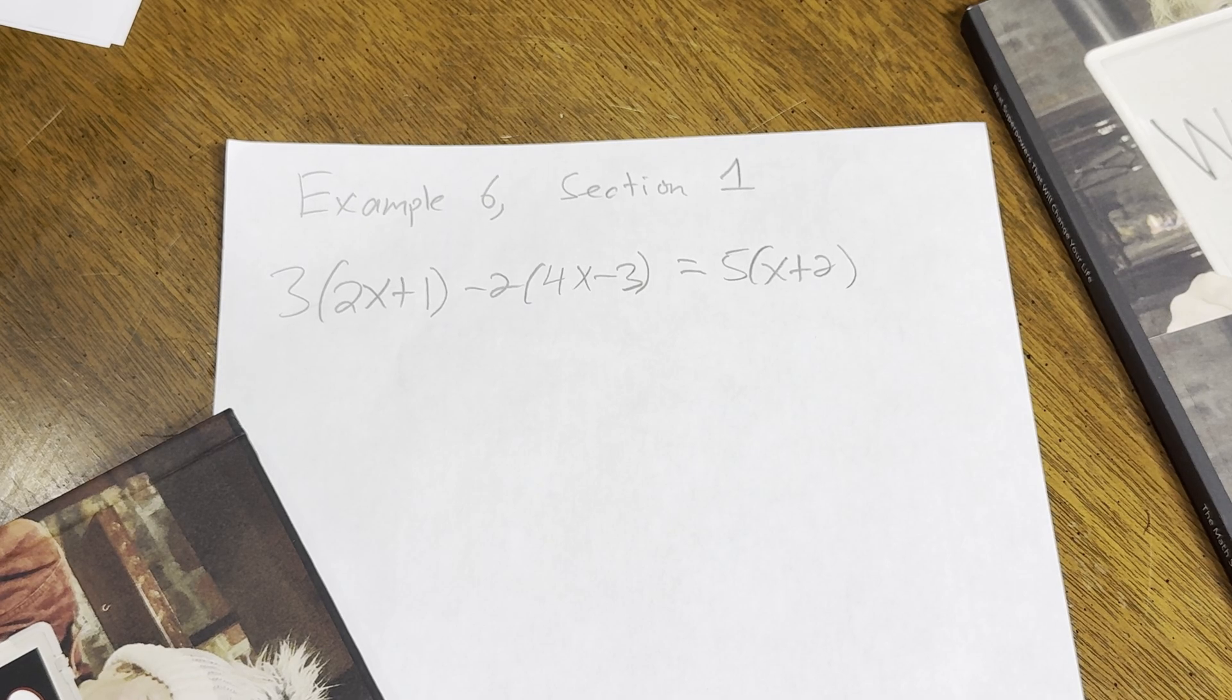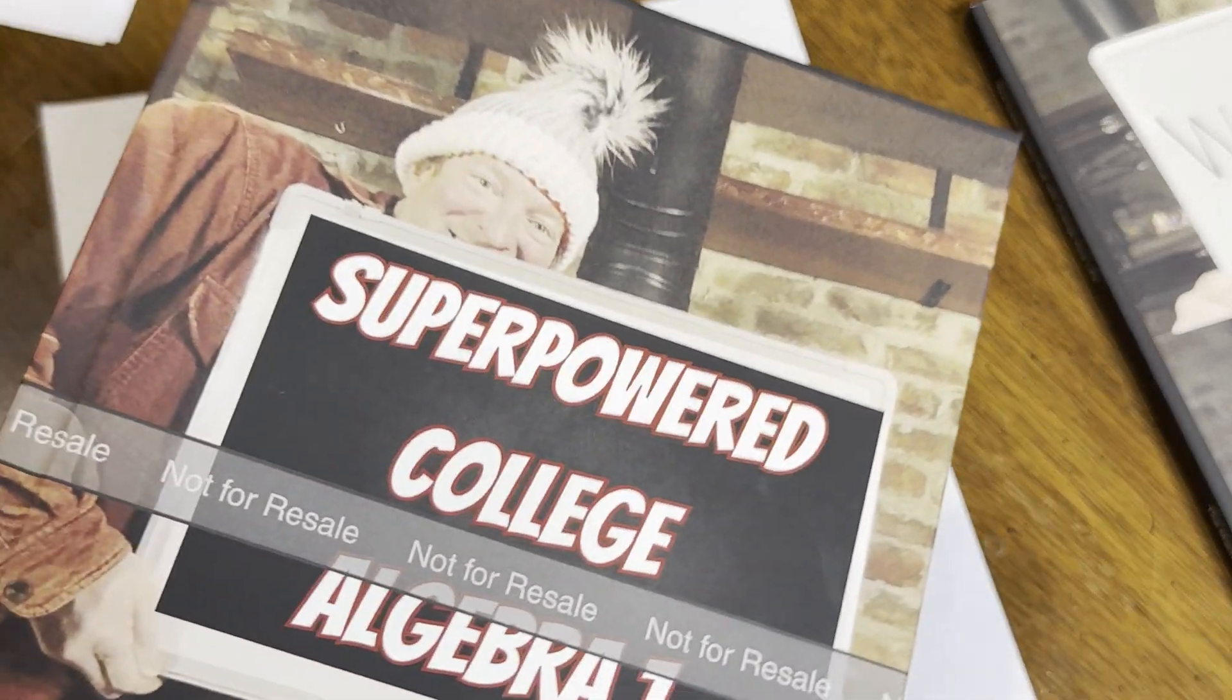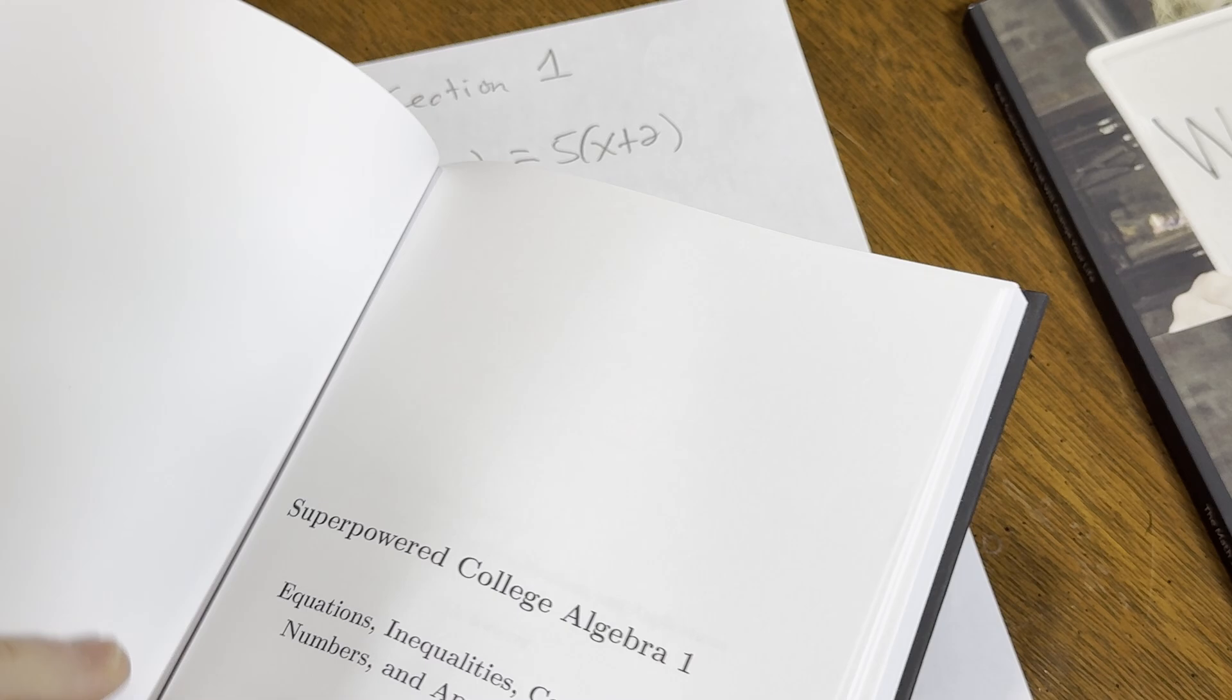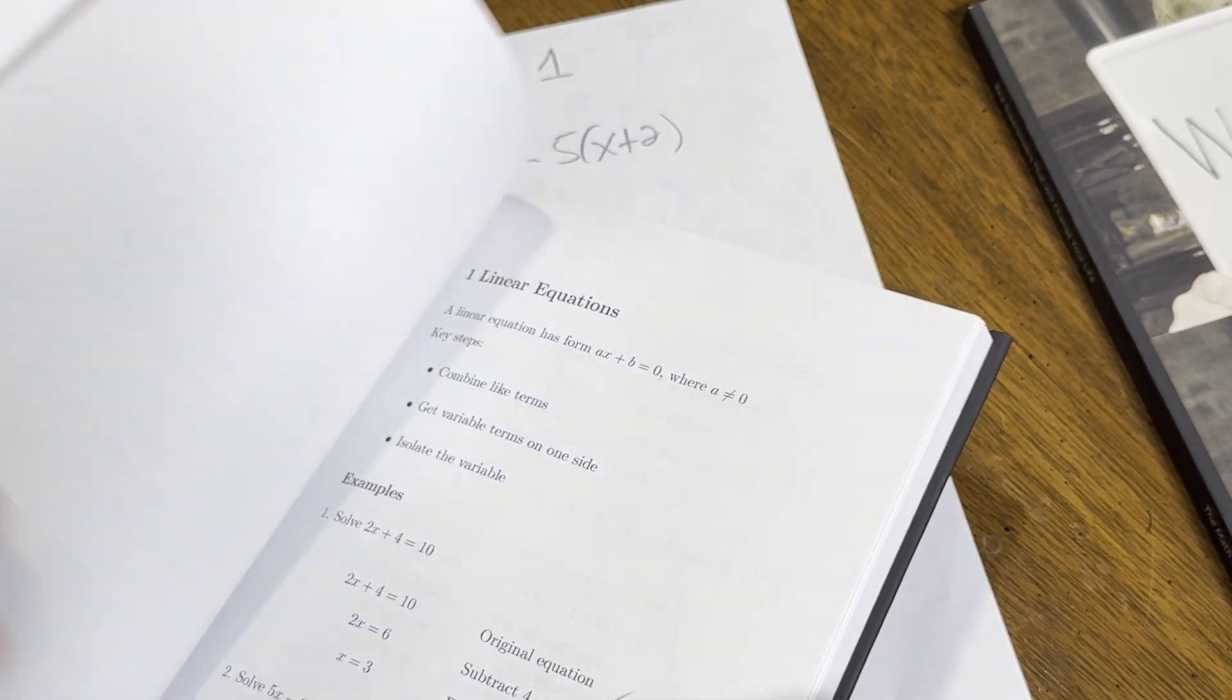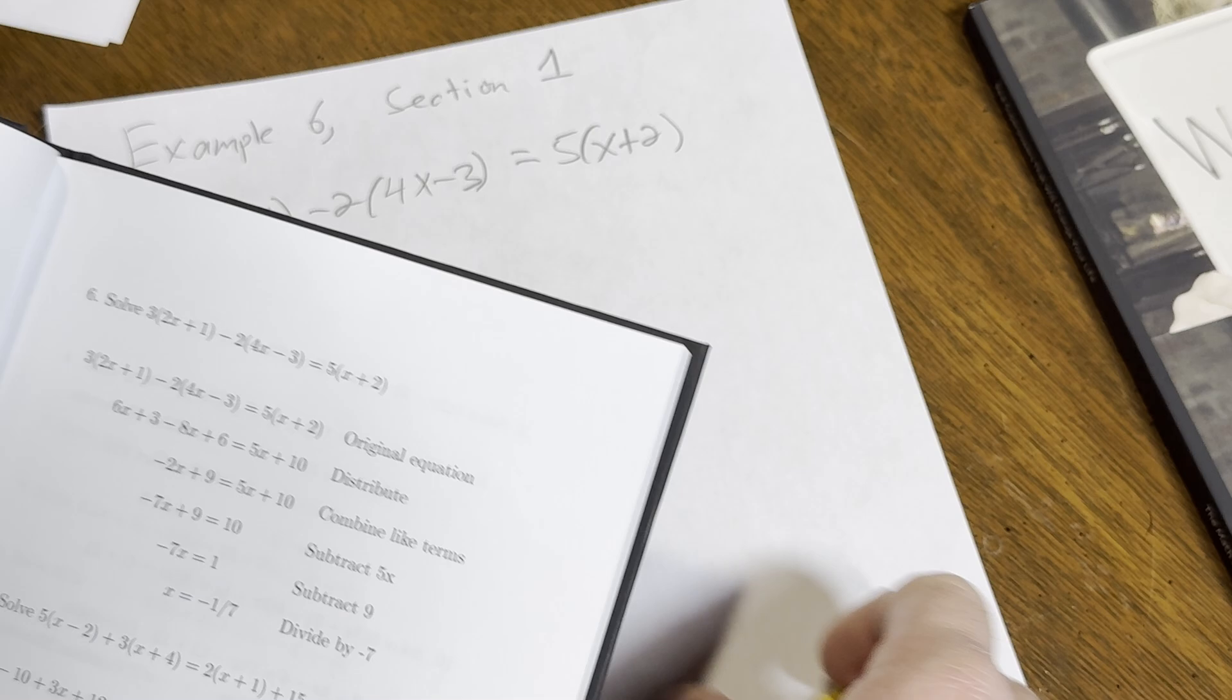Hi, in this short video we're going to be solving a linear equation. We're going to solve Example 6 from Section 1 from my book Super Powered College Algebra One. This is a book for super beginners. It's meant to get you to actually do mathematics. It is straight to the point and has full solutions to every example and exercise.